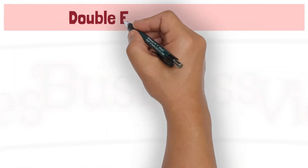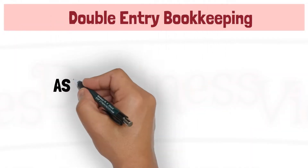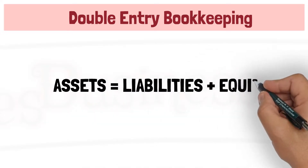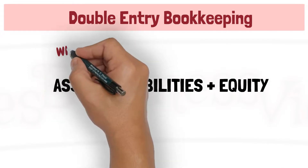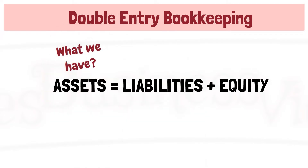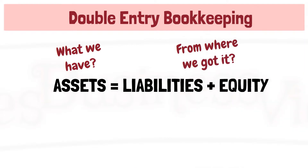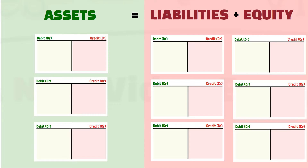To better explain the concept of the double entry system, let us refer back to the accounting equation that we introduced in the third video of this series. Assets equals liabilities plus equity. The assets side shows what resources the business has, and the liability and equity side shows from where the business got these resources. There is a group of accounts under each one of these categories.